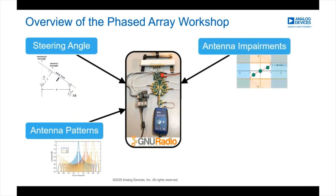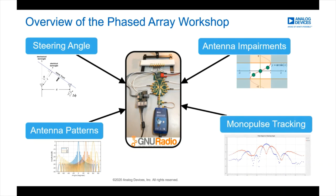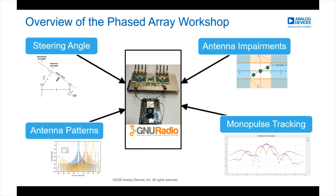We'll carry that math further and look at antenna patterns: element factor, array factor, side lobes, beam width. We can manipulate the number of elements and the steering angle and see how that impacts the overall antenna pattern. Then we'll use the hardware to show common antenna impairments like beam squint, grating lobes, and beam tapering. In our final section, we'll upgrade our hardware into a true monopulse tracker that finds and locks onto an RF source as it moves across the room.